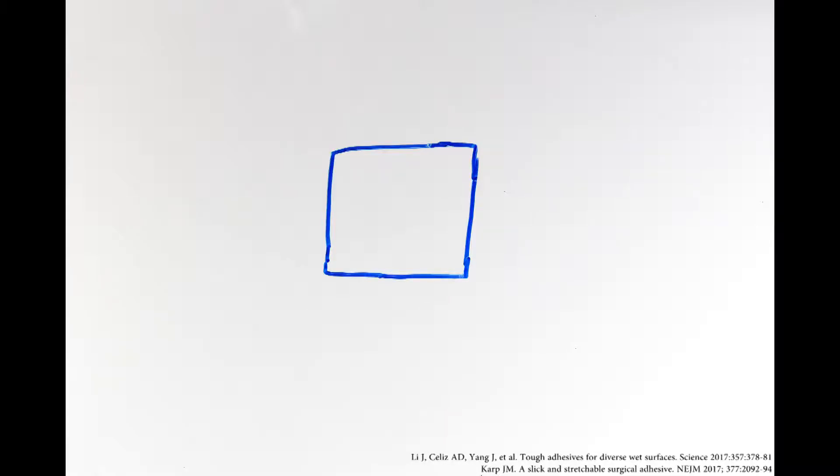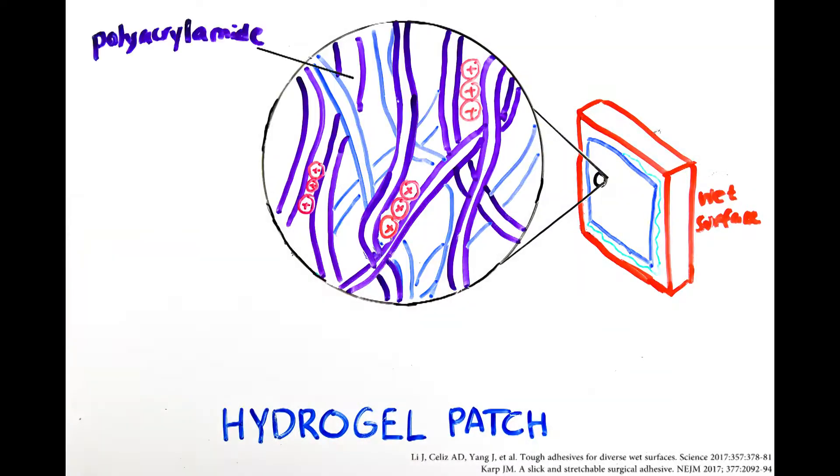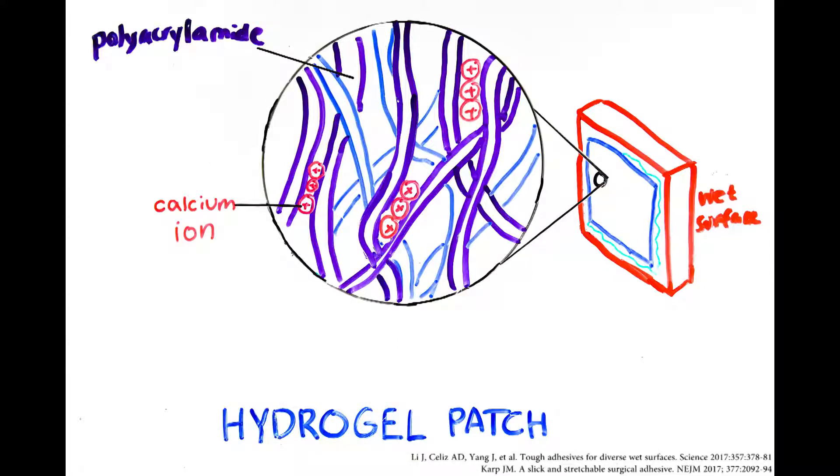Inspired by slug slime, scientists have found a way to create a hydrogel patch that isn't only flexible, but can also stick to wet or bloody surfaces. The hydrogel mimics the properties and charges of slug slime with polyacrylamide, calcium ions, negatively charged alginate, and positively charged bridging polymers.